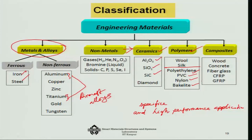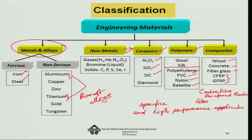Bakelite is used for making insulating materials for electrical applications. That covers the polymers. If we talk about composites, we have wood as a natural composite, then concrete, fiberglass, CFRP and GFRP. CFRP is carbon fiber reinforced plastic and GFRP is glass fiber reinforced plastic. These are various types of composites which are very widely used — that is the broad classification of engineering materials available today.